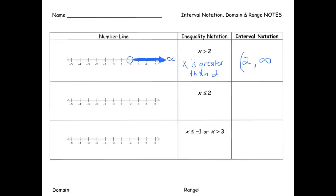Another thing I want to talk about is the concept of infinity. Infinity you have to think of as a very, very large number, but it's not actually a number because we can always think of a number bigger than it — so it's more of an idea. Since we can't put a cap on it, we're also going to use a parenthesis to show that it doesn't really have any bound; it just keeps going, getting bigger.